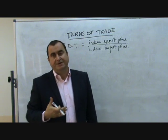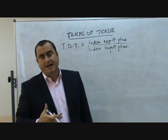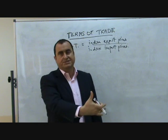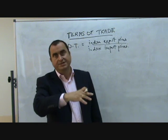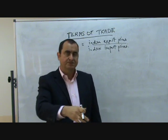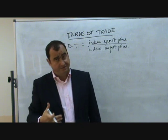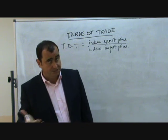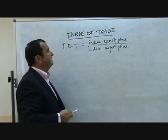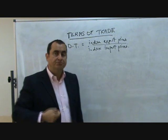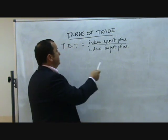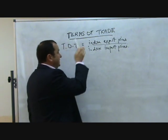Countries specialise and export certain things, and will need the earnings from those exports to be able to pay for the imports they wish to buy. If Terms of Trade for a country improves, it would mean that this ratio would increase.